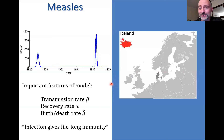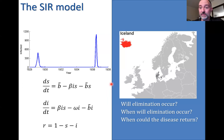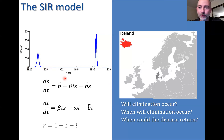Measles is typically regarded as a childhood disease—once you have it, you can't get it again. In ideal circumstances you should be able to describe it with states of susceptibility, infectiousness, and removed. The question is: given our classical formulation of compartmental models, can we inform on whether the disease will be eliminated, when elimination will occur, and when the disease might return? Looking at data from Iceland, there's an outbreak just after 1928, ending before 1930, with no documented incidences until after 1936. Can we use a differential equation compartmental model to describe this?